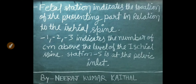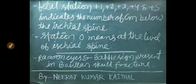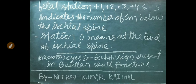Station minus 5 is at the pelvic inlet. Fetal station plus 1, plus 2, plus 3, plus 4, and plus 5 indicates the number of centimeters below the ischial spine. Station 0 means at the level of the ischial spine.